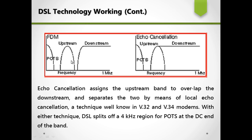The upstream channel and the downstream channel are divided into two parts. In echo cancellation, the upstream data is assigned to overlap the downstream band, and the two are separated by means of local echo cancellation — a technique well known in V.32 and V.34 modems. With either technique, DSL splits off a 4 kHz region for the POTS (plain old telephone service) portion of the band.